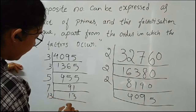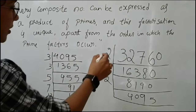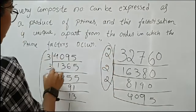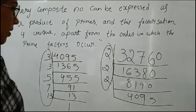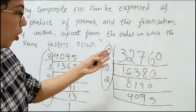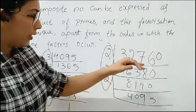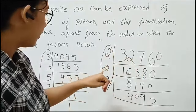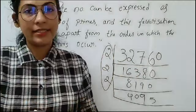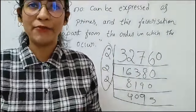And finally, these are the factors of the number 32,760. Listen carefully — all these numbers are prime, not composite numbers. So this is a composite number and all its factors are prime numbers. This is the theorem. Hope you understand this theorem very well.